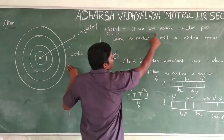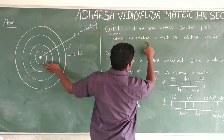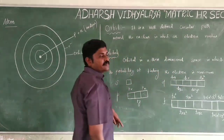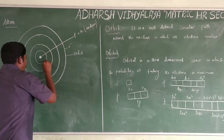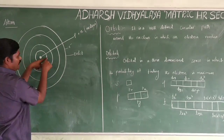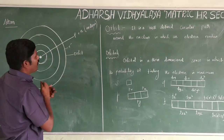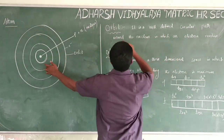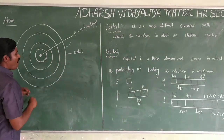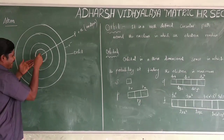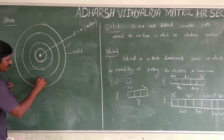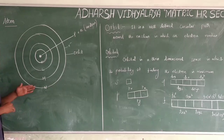An orbit is a well-defined circular path around the nucleus in which an electron revolves, surrounding the nucleus. The orbits are denoted by capital letters: K, L, M, N, etc. The first orbit near the nucleus is the K orbit, the second is L, the third is M, and the fourth is N.